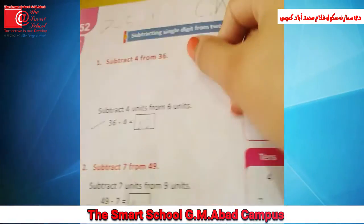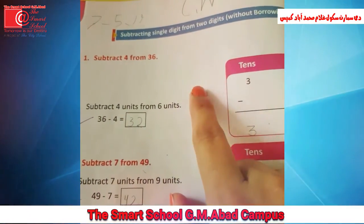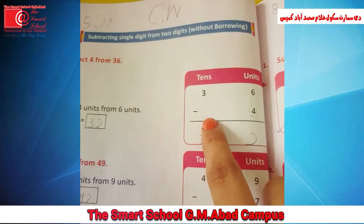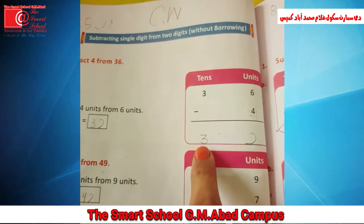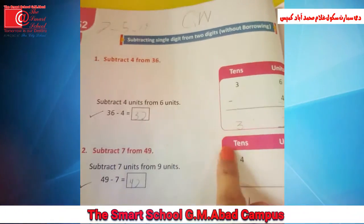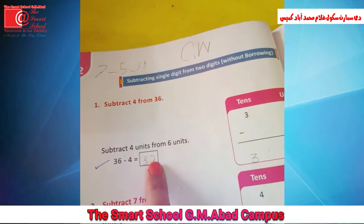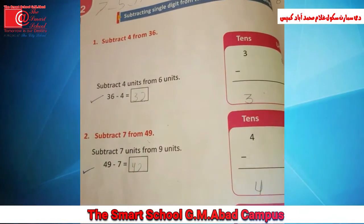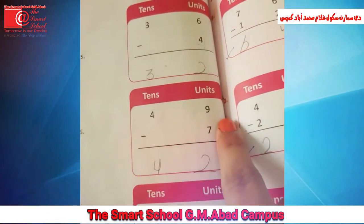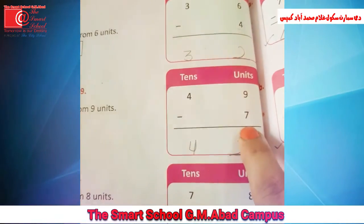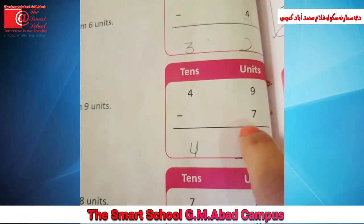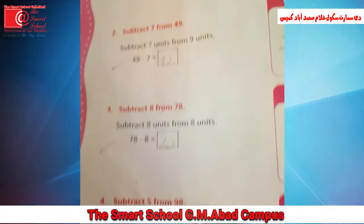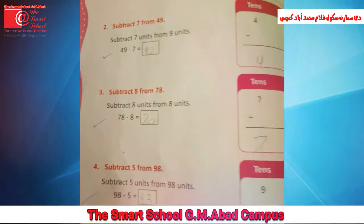6 lines side पे roughly draw करें — 1, 2, 3, 4, 5, 6 — उसमें से 4 को cut कर दें। Answer जो बचेगा वो है 2, और 3 के नीचे कोई amount minus नहीں करنی, तो answer हमारा 3 आ जाएगا। तो answer है हमारا 32. Question number 2 भी इसी तरह है — subtract 7 from 49. 9 lines draw करनی हیں، ان میں سے 7 کو cut کر دینا ہے، answer 2 آ جائے گا اور 4 وैसے ہی آ جائے گا۔ Question number 3 اور 4 بھی same ہیں، آپ نے یہ خود solve کرنے ہیں۔